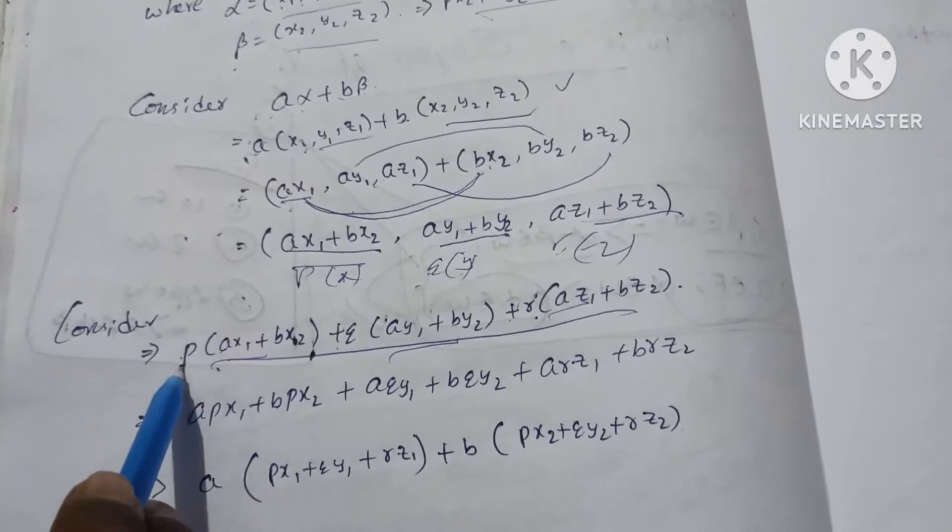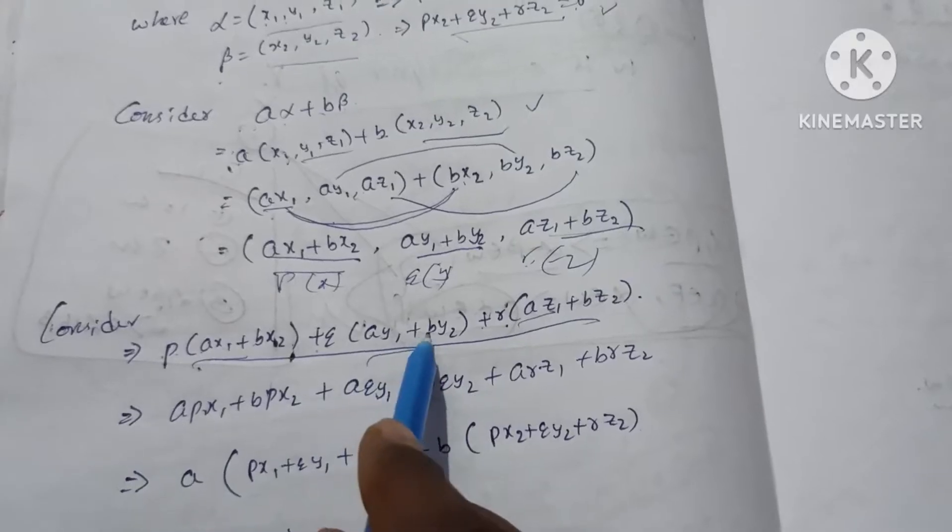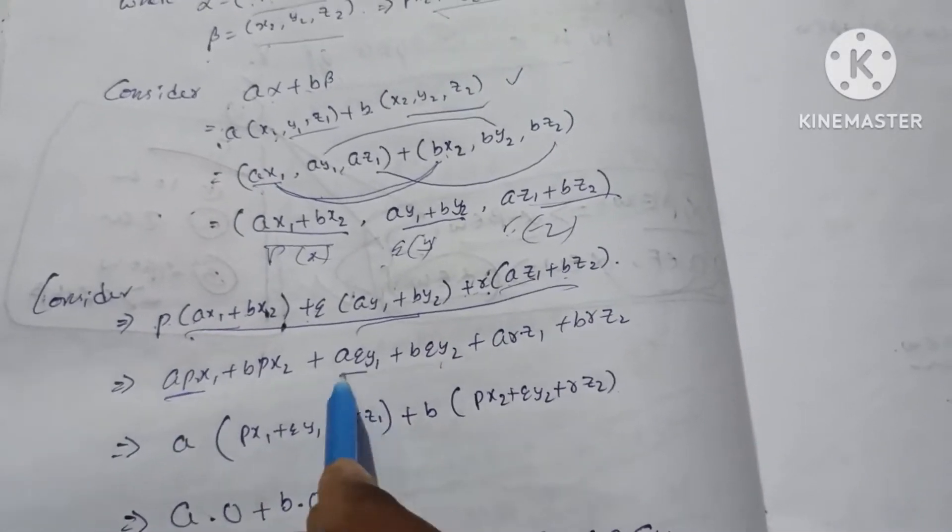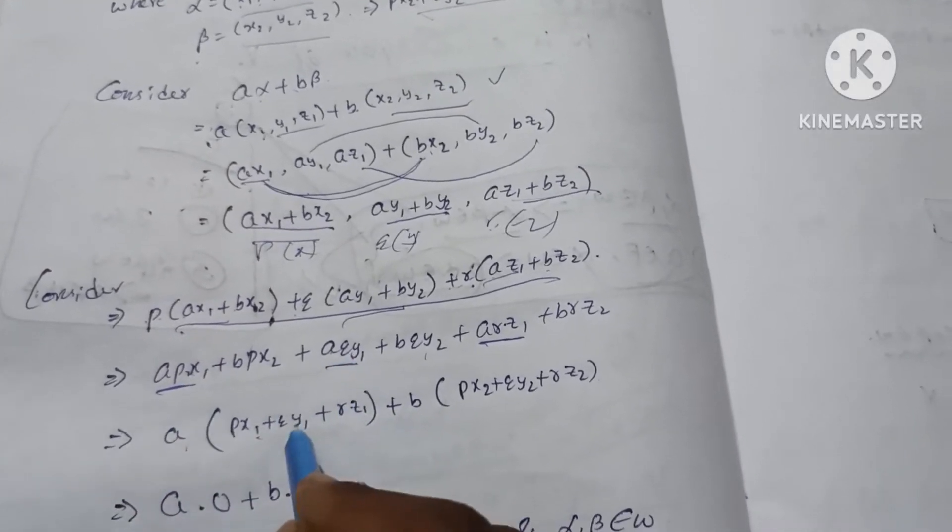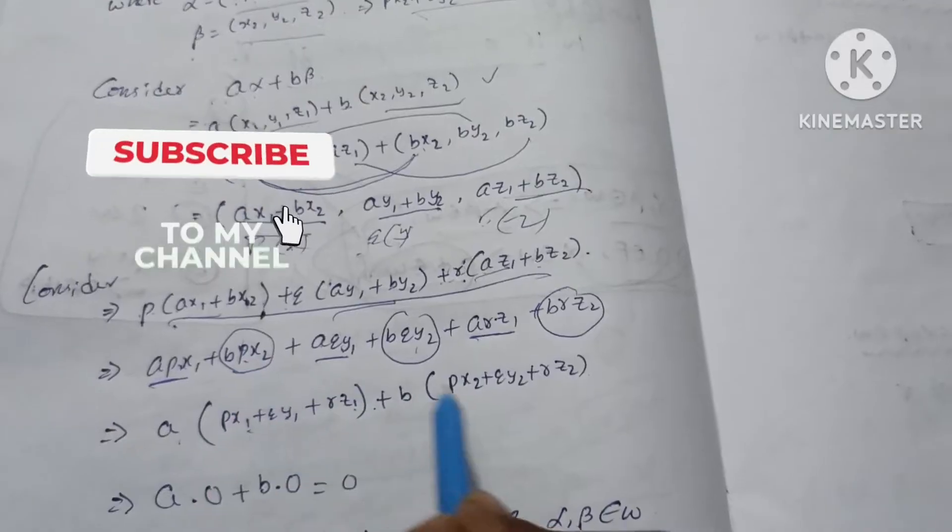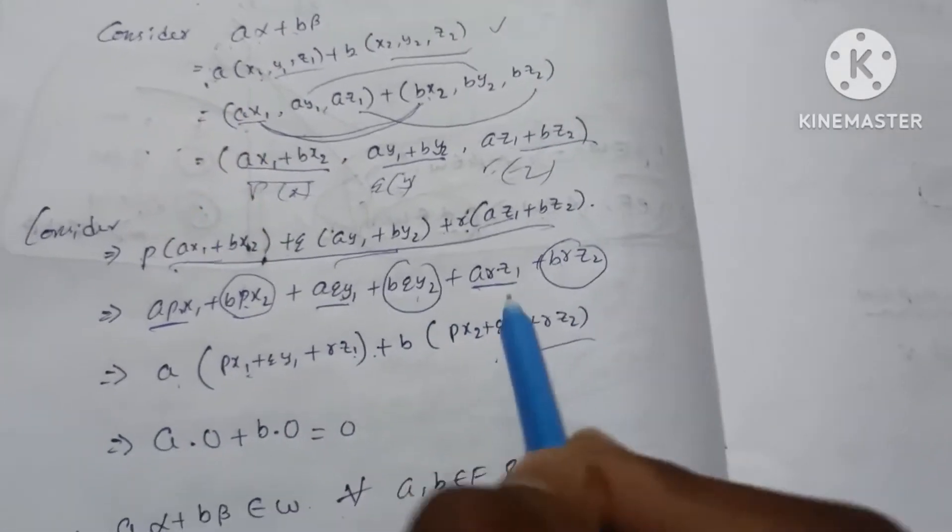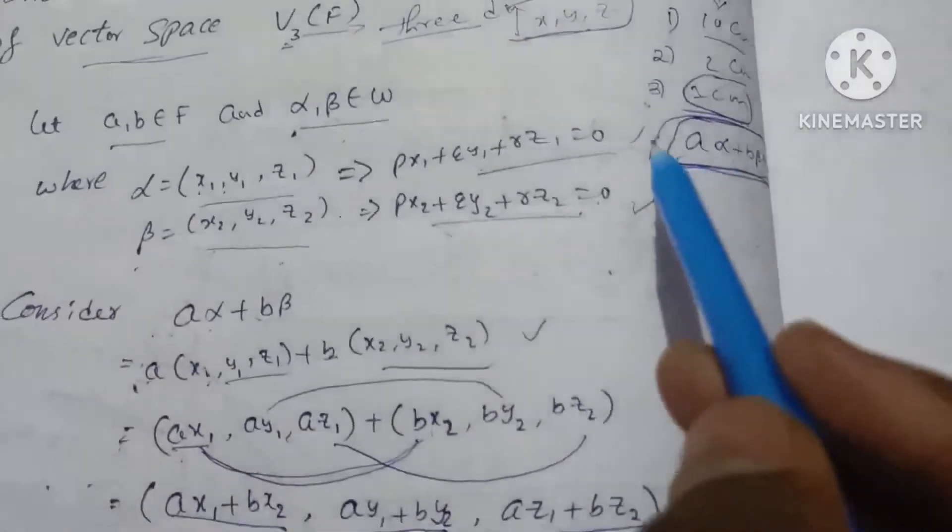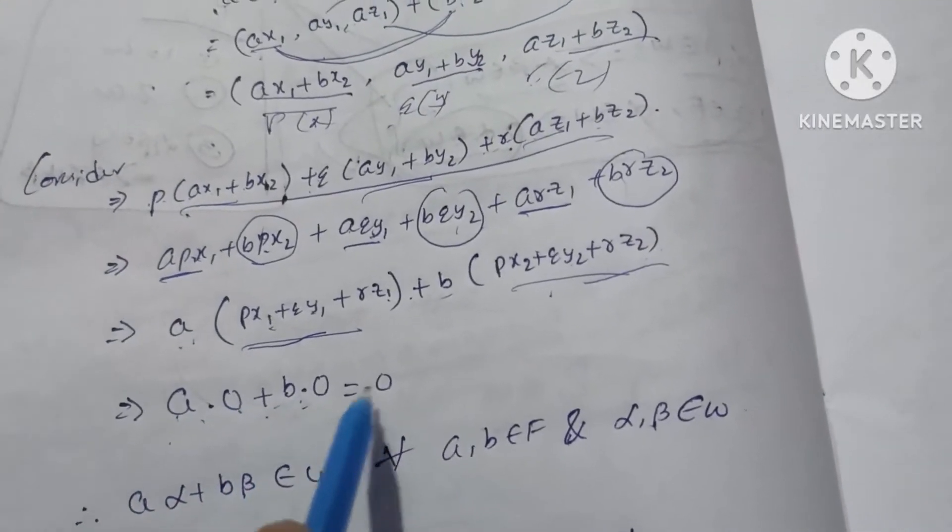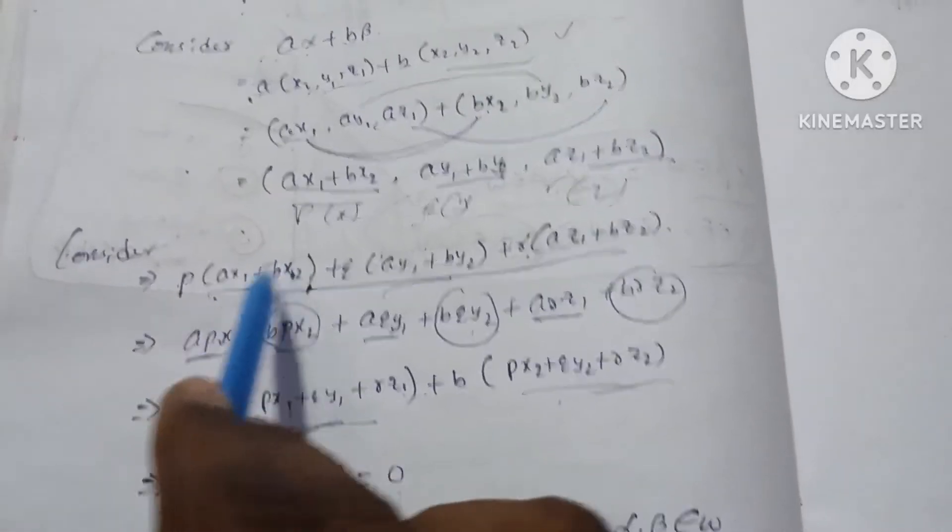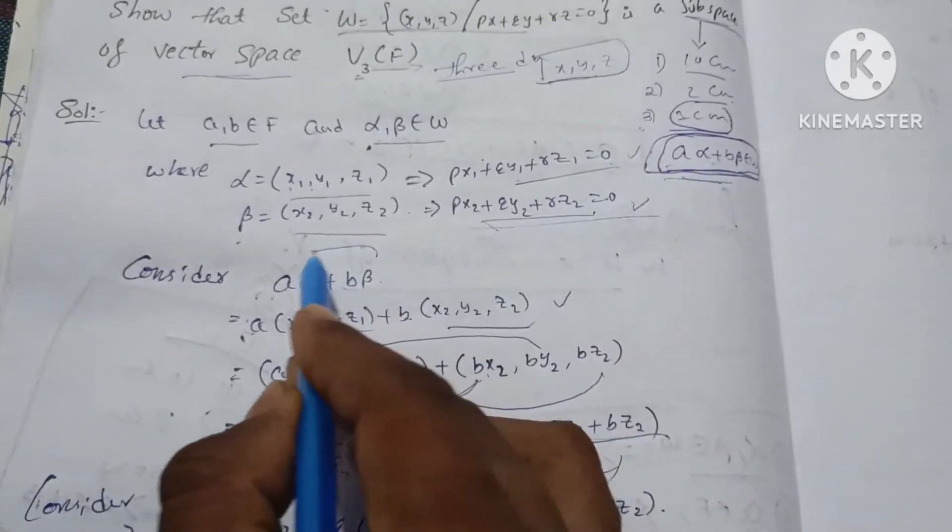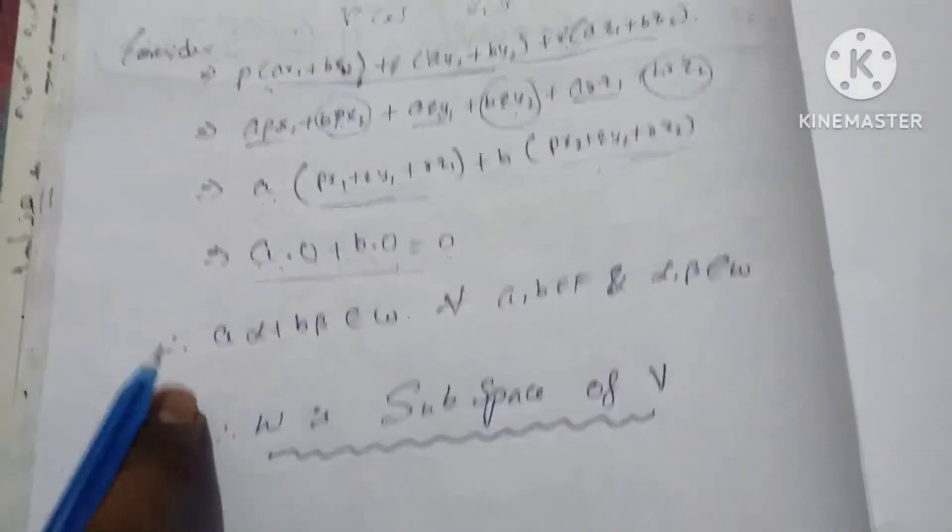So multiply: p times ax1, p times bx2, q times ay1, q times by2, r times az1, r times bz2. Now the terms are common. A is common: px1 plus qy1 plus rz1, plus b is common: px2 plus qy2 plus rz2. So a into this value 0 plus b into this value 0, so a into 0 plus b into 0 is equal to 0.